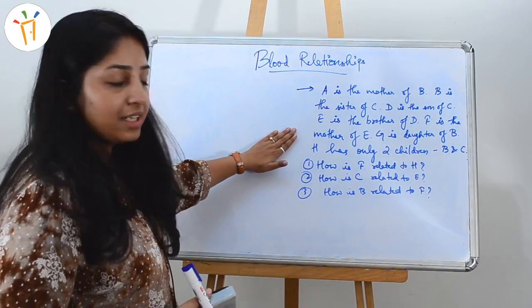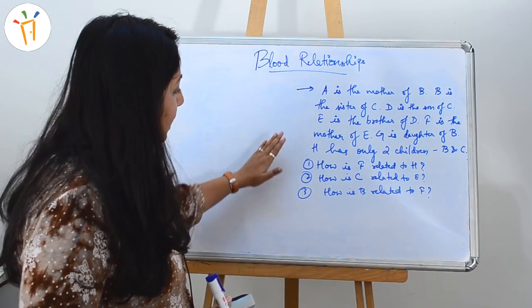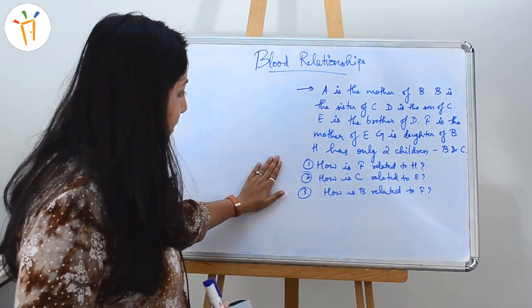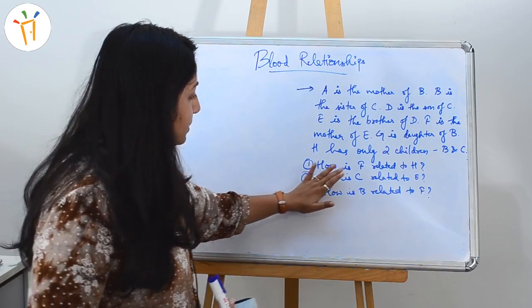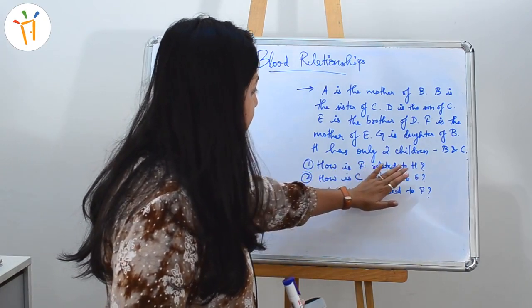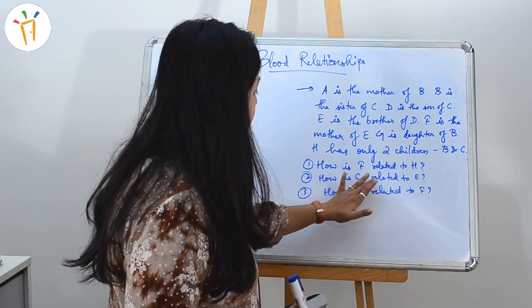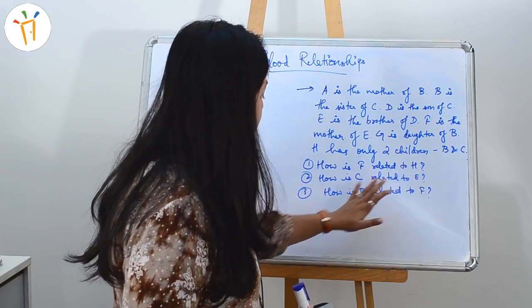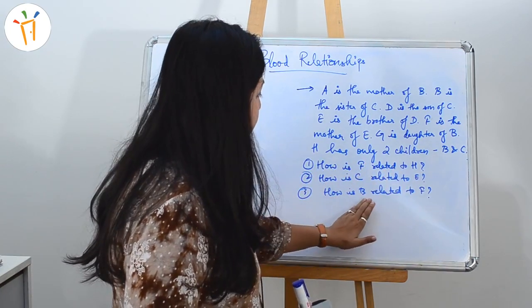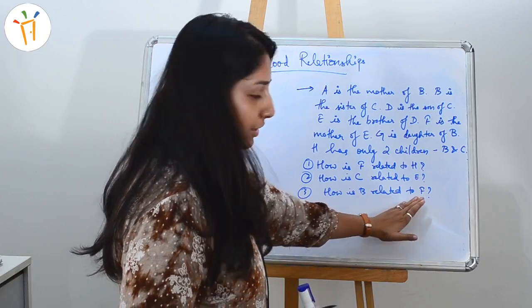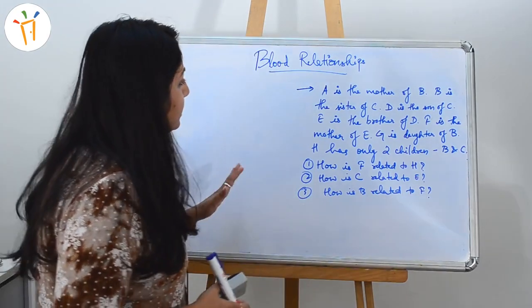This is the passage that is given and the questions are: how is F related to H? How is C related to E? And how is B related to F?